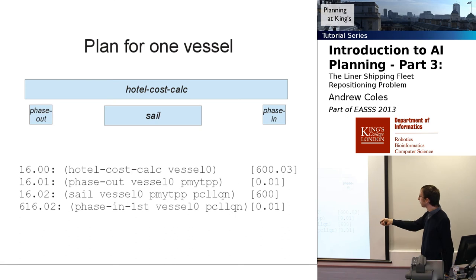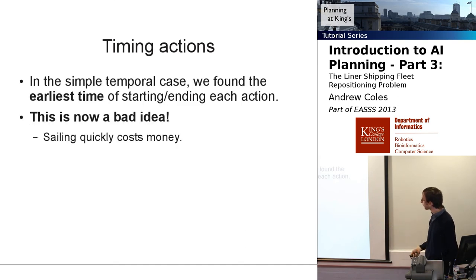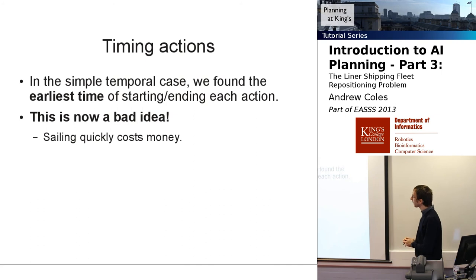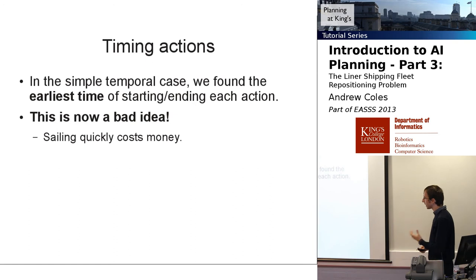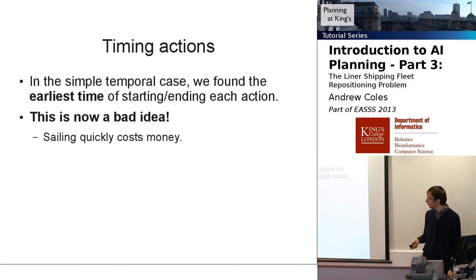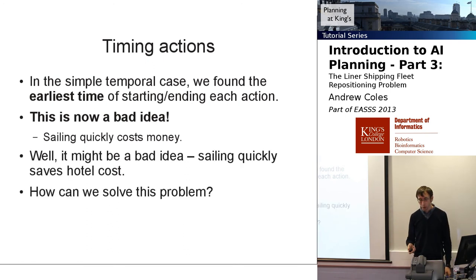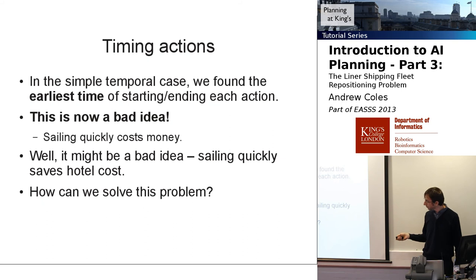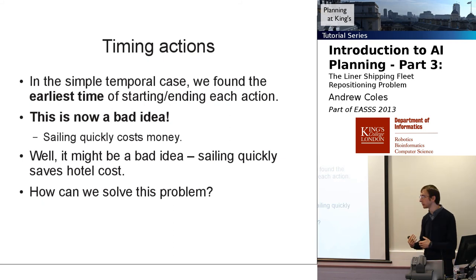In the simple temporal case, we'd do each action at the earliest possible time. In this case it's not always ideal to do things quickly, because sailing quickly costs money — but it also saves hotel costs. How, in the general case, can we deal with opposing time-dependent costs? There's no one-size-fits-all solution.